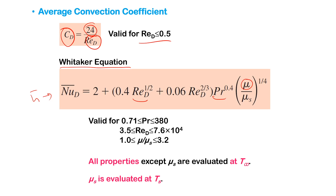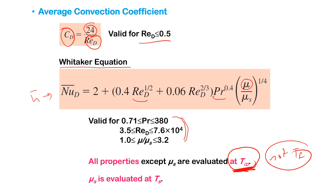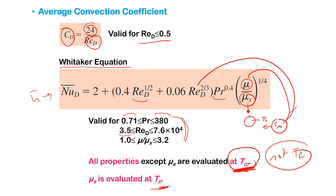Please pay attention that this equation has to be evaluated at T_infinity — everything is evaluated at T_infinity, not T_film. This is an exception. This is the second equation where we use T_infinity rather than T_film. The validity range is Prandtl number between 0.7 and 380, and Reynolds number between 3.5 and 7.6×10⁴. Here, mu_s is the viscosity evaluated at the surface temperature of the object, while all other properties are evaluated at T_infinity.